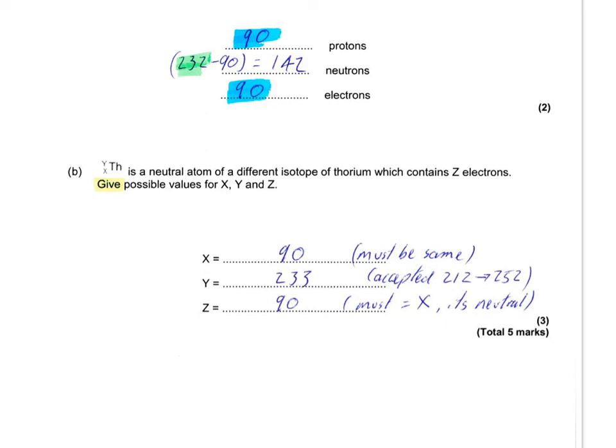I went with one extra, 233. Their mark scheme accepted anything between 20 fewer and 20 more. Anything between 212 and 252. It will suggest a possible value for X, Y and Z.